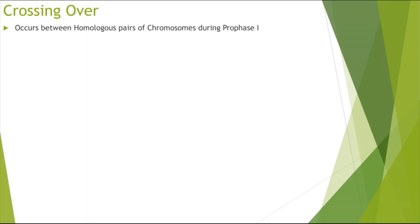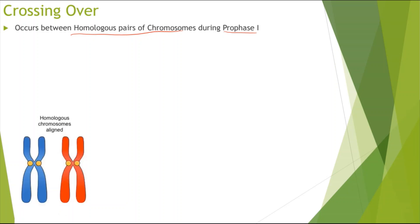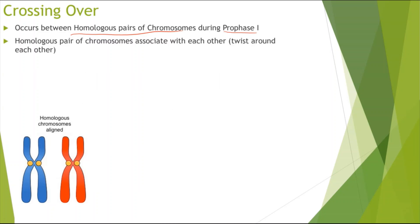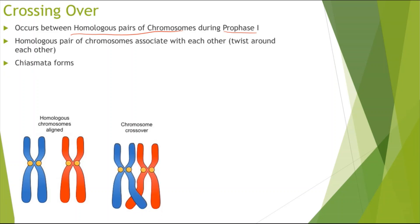Meiosis results in genetic diversity through several mechanisms. The first is crossing over, which occurs between homologous pairs of chromosomes during prophase one. The maternal and paternal chromosomes align with each other, and the homologous pair associates — meaning they twist around each other — and a chiasmata forms. Looking at the diagram, we can see the different homologous pairs, maternal and paternal, have twisted around each other and this overlapping region is called a chiasmata.